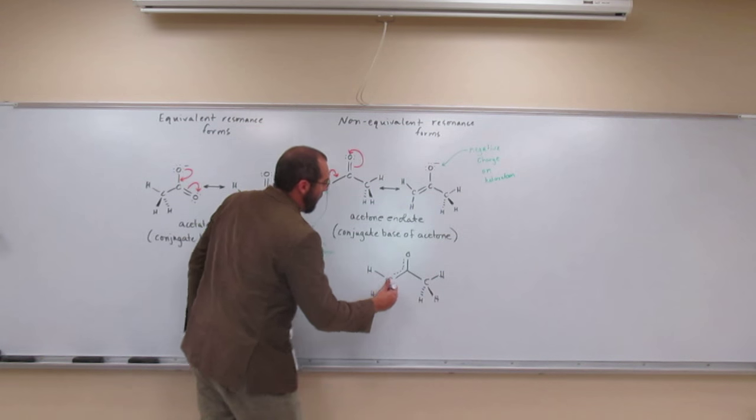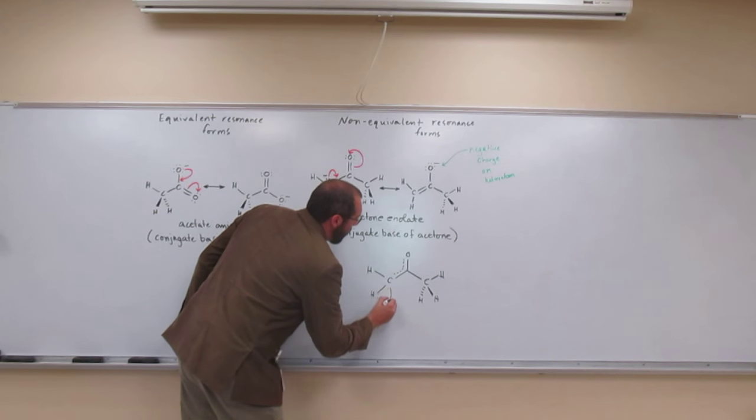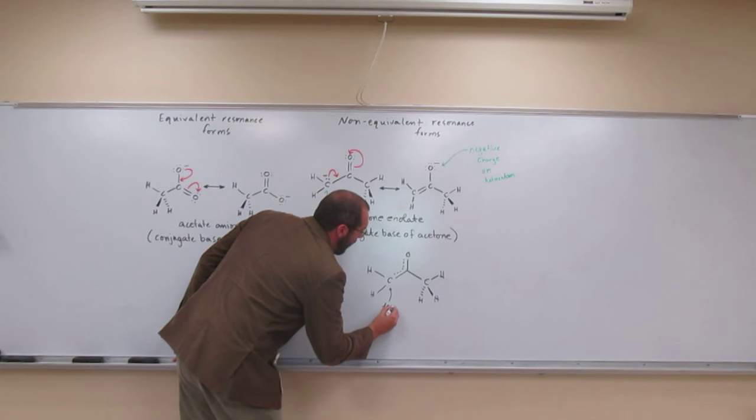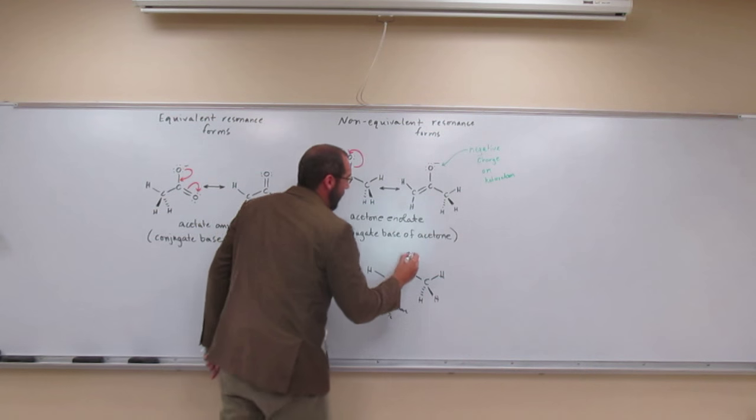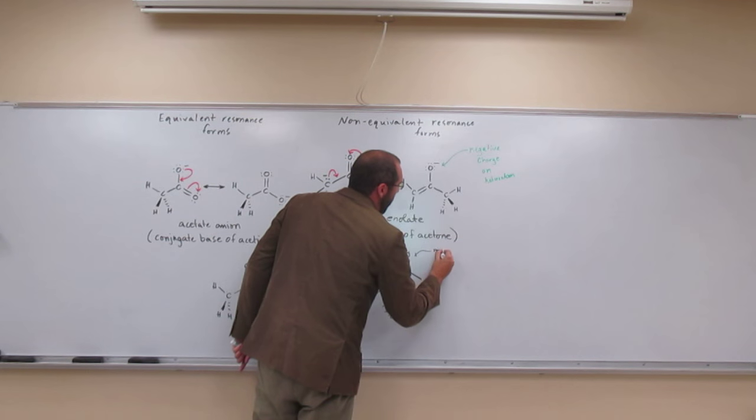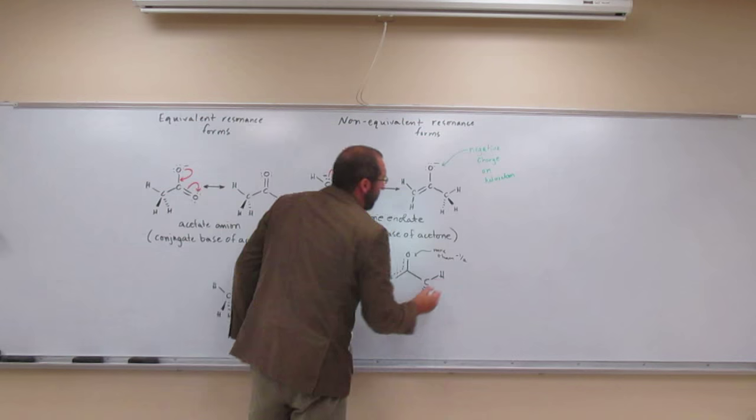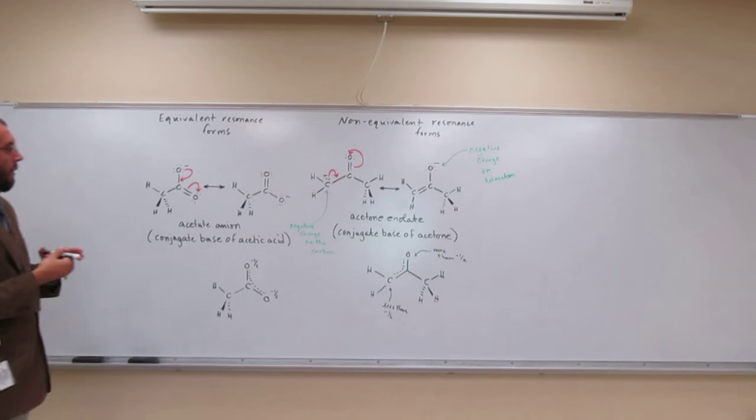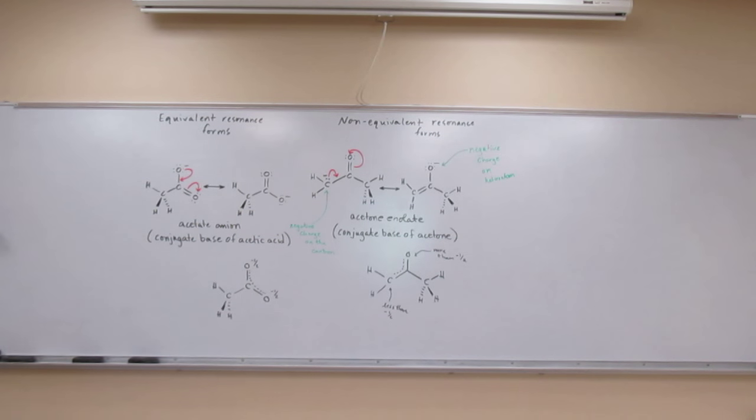We get, so this would be less than negative one half, and this one would be more than negative one half. And you don't have to figure out how much more or how much less, okay? You just have to know qualitatively.